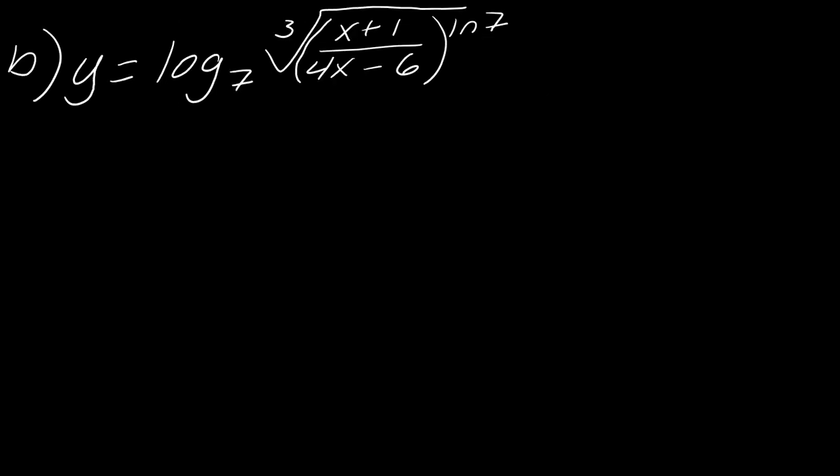Moving on to this one — it's the same idea where we want to simplify first. If you're really rusty with your log properties, I highly recommend pausing the video and forcing yourself to try this. Even if you get it wrong, that's okay — you're not going to get better just by watching. You have to get your hands dirty with the math and then reflect on what you're getting and what you're not getting. First things first — notice I have this crazy situation: log base 7 and the cube root of this whole thing.